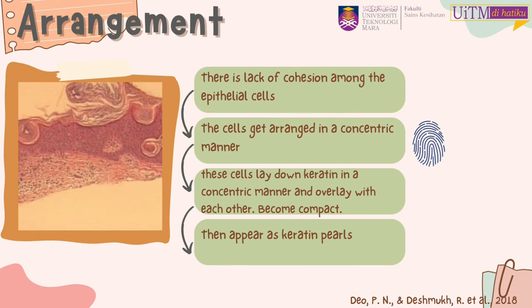Keratin pearls form when there is a lack of cohesion among epithelial cells. The cells get arranged in a concentric manner, which looks like a fingerprint. As the cells form keratin, they lay down in a concentric manner and overlay each other, becoming compact. After that, a pearl is formed, known as a keratin pearl.